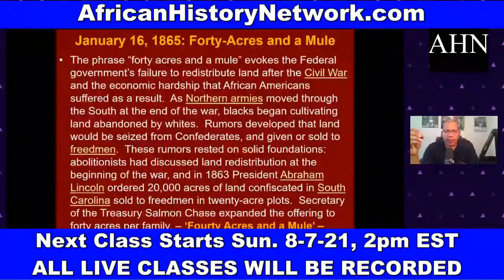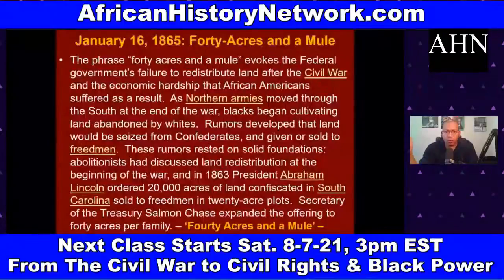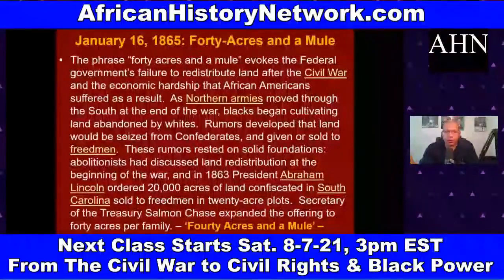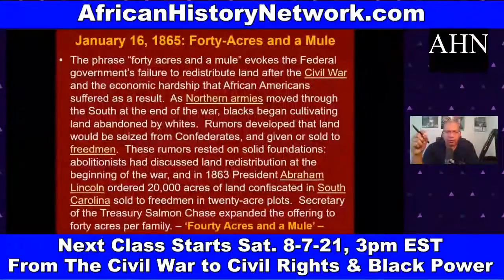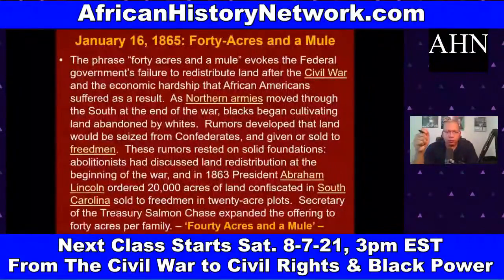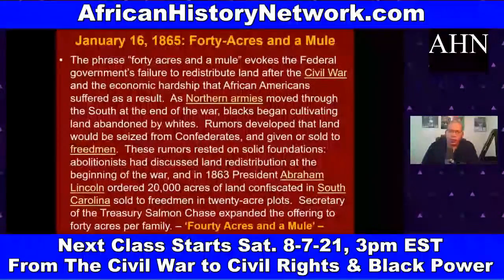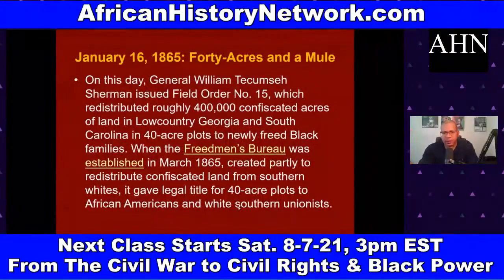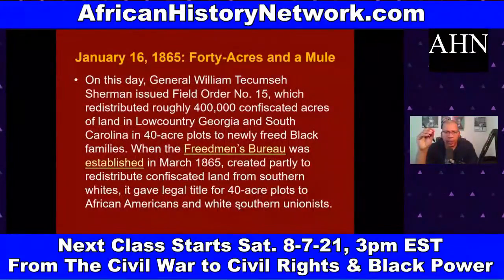As Northern armies moved through the South at the end of the war, African Americans began cultivating land abandoned by whites. Rumors developed that land would be seized from Confederates and given or sold to freedmen. These rumors rested on solid foundations — abolitionists had discussed land redistribution at the beginning of the war. In 1863, President Lincoln ordered 20,000 acres of land confiscated in South Carolina sold to freedmen in 20-acre plots. Secretary of State Salmon Chase expanded the offering to 40 acres per family.